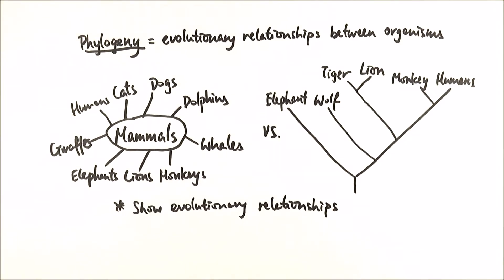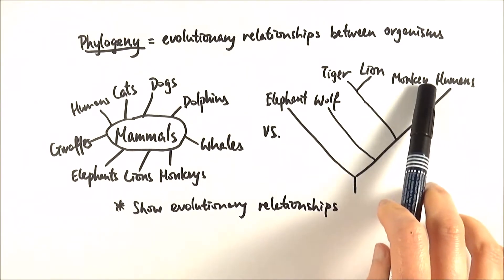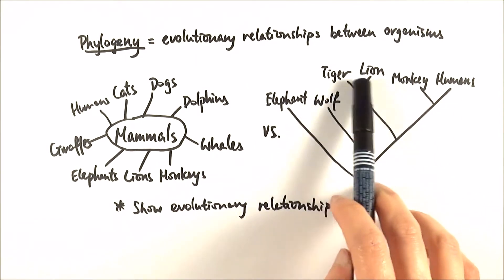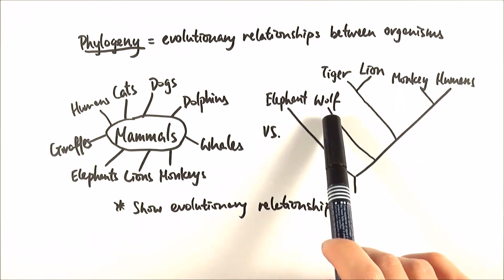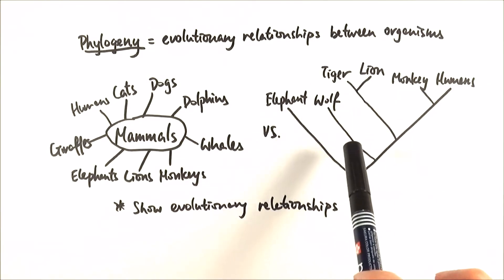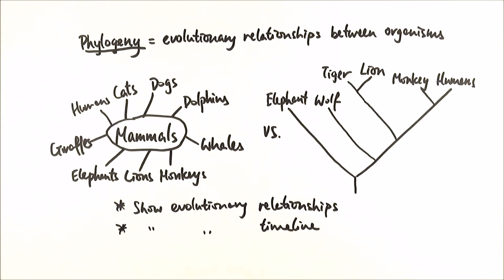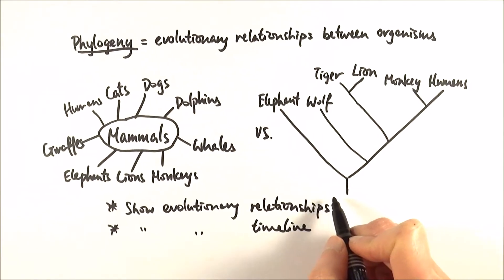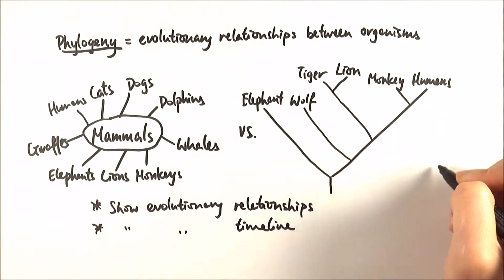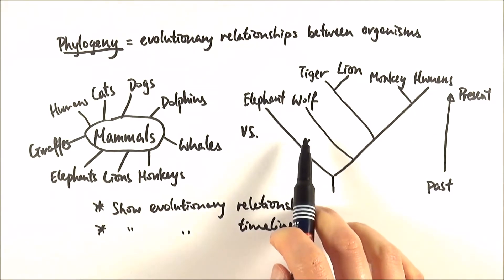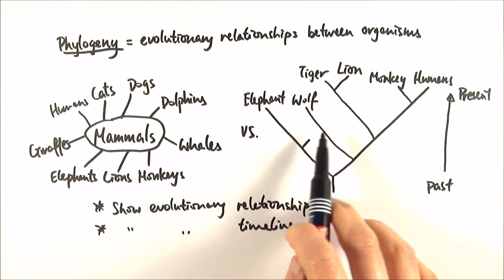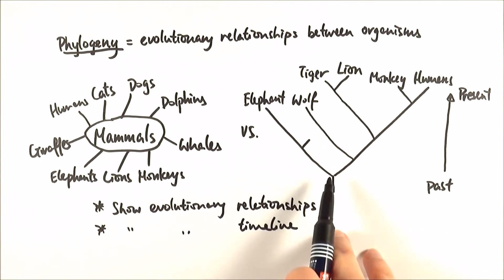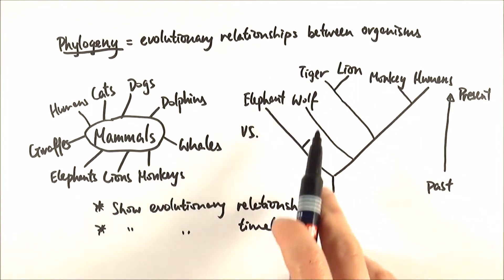What's good about a phylogenetic tree is that it can show evolutionary relationships. Here you can see that monkeys and humans are quite close together at the tip, meaning they are closely related. Tiger and lion are the same, wolves are slightly further, and elephants slightly further still. They also show an evolutionary timeline — the origin of time is at the base, and as we go up the tree we move toward the current time. Imagine mammoths branching off lower down, meaning they existed in the past but are now extinct.